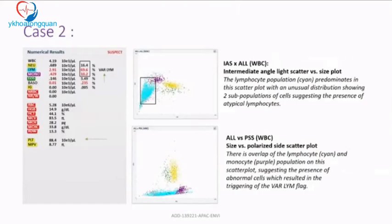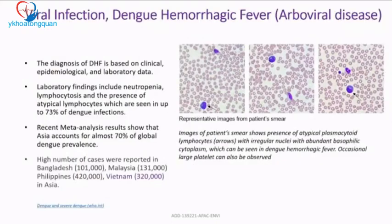In the PSS plot — size versus polarized side scatter — there is an overlap of the lymphocyte (blue) and monocyte (purple) populations, suggesting abnormal cells and triggering the lymphocyte variation flag. When you receive a flag on a hemogram printout from a six-part differential analyzer, please take it very seriously.